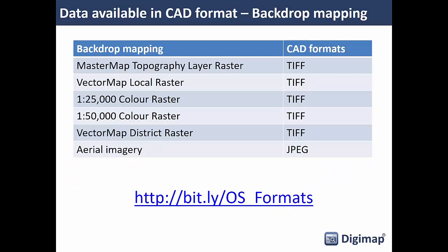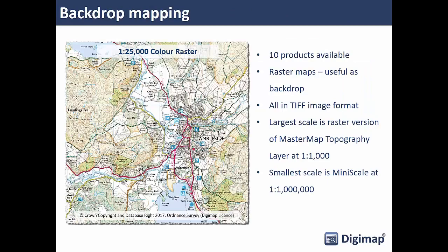There's also a whole bunch of backdrop mapping products available in TIFF format to add context to your modelling. In total there are ten different raster products available; the majority are in TIFF format, aerial imagery comes in JPEG format, and there's a raster version of MasterMap Topography. If you just want detailed backdrop mapping, take the raster version and pull it into your CAD application.